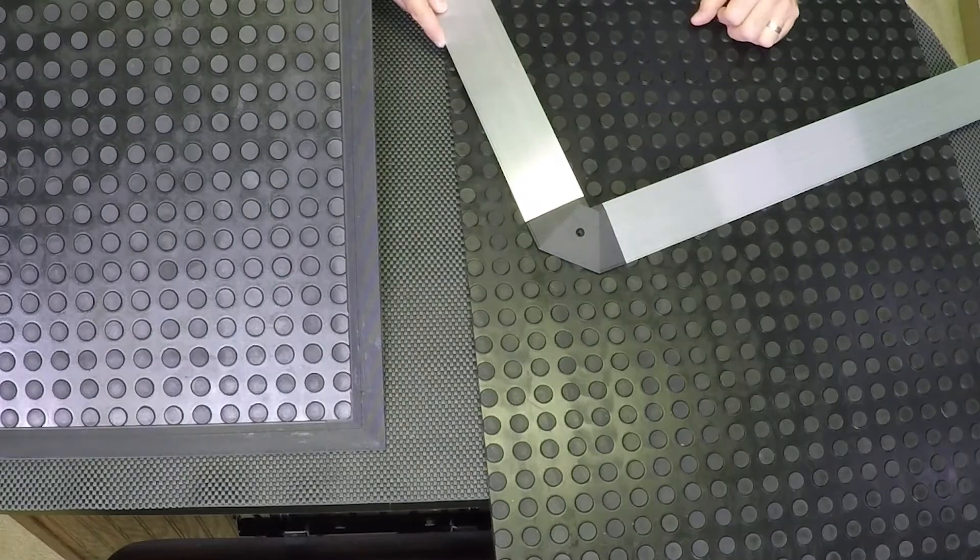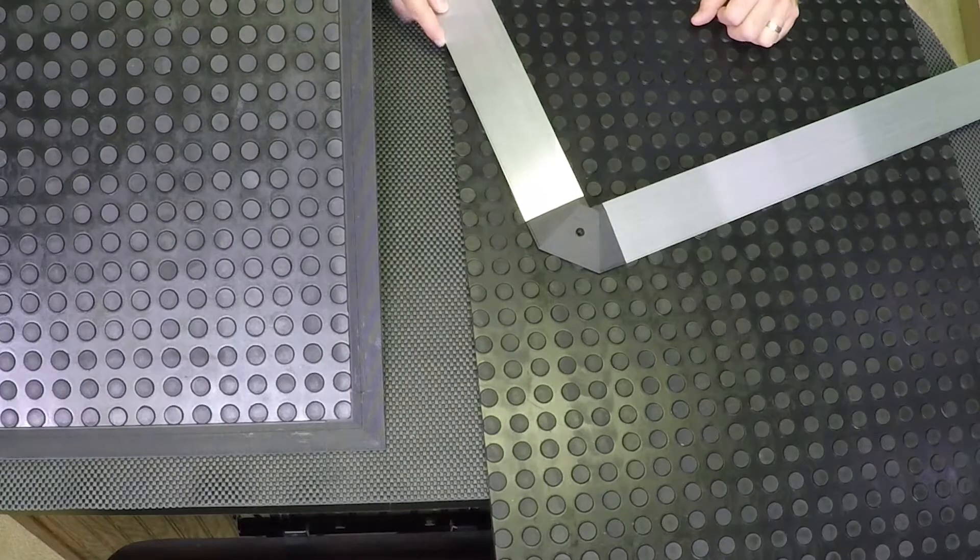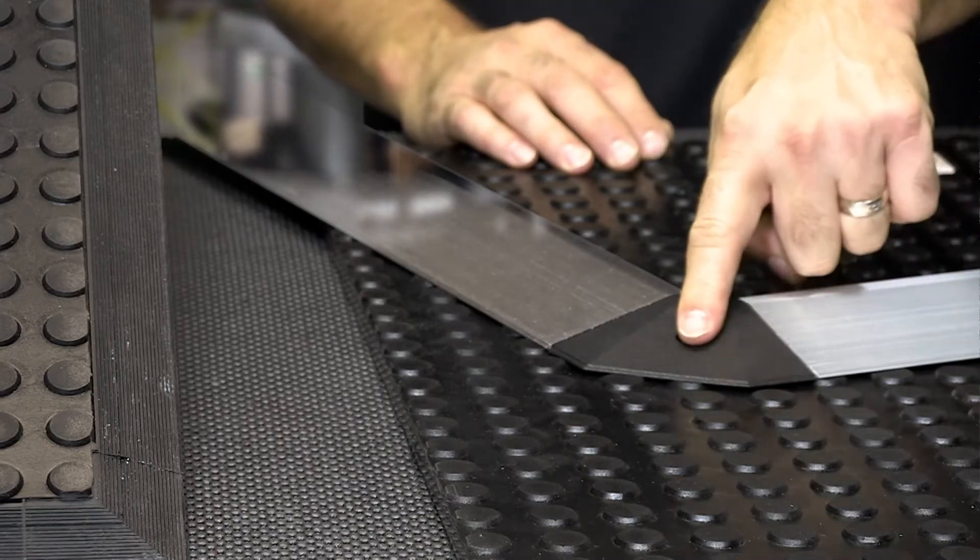Trim kits are available in sizes to match the square edge mats. This kit comes with aluminum rails and end caps.